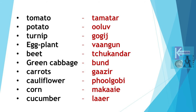Eggplant is Vaangun. Vaangun. Beet is Chukandar. Green cabbage is Bandh. Carrots are Gazir. Cauliflower is Fulgobi. Fulgobi. Corn is Makai. Makai.